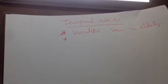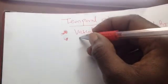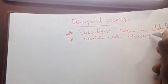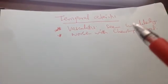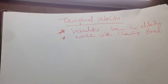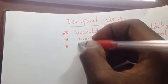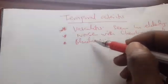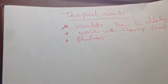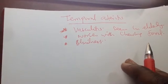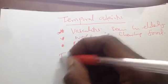The pain of temporal arteritis is worsened with chewing — masticating food — because the muscles of mastication receive inadequate blood supply. When they are used to chew, the headache gets worse. Temporal arteritis can also affect the retinal arteries, so the patient may complain of blindness or visual disturbance. Blindness is the most important complication, which is why temporal arteritis must be treated with steroids to prevent it.